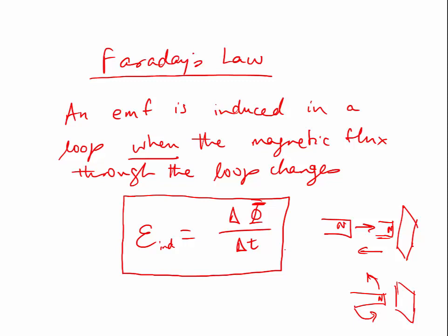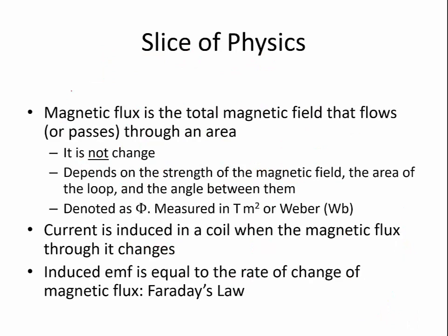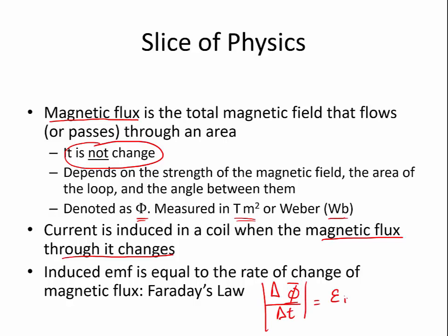In the next video we'll talk about the direction of that current using Lenz's law. To summarize: magnetic flux is the total amount of magnetic field that flows through an area, denoted by capital Φ, measured in tesla·meter² (Weber, symbol Wb). It depends on three things: the strength of the magnetic field, the area of the loop, and the angle between them. A current and EMF are induced in the coil when the magnetic flux changes, and Faraday's law gives us the expression: the absolute value of ΔΦ/Δt equals the induced EMF.